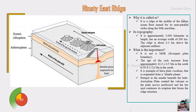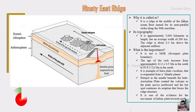It is an example of intra-plate volcanism, originating from a mantle plume. The hotspot in the mantle beneath the Indo-Australian Plate creates volcanoes. As the plate moves northward, the hotspot continues its eruption, forming the ridge structure.